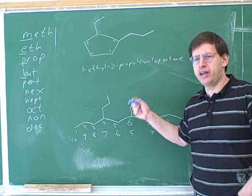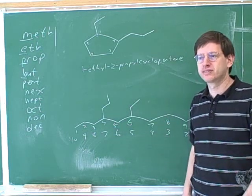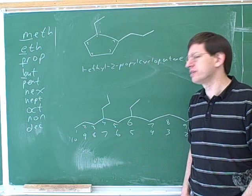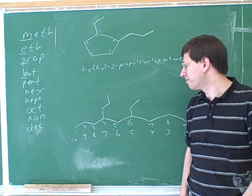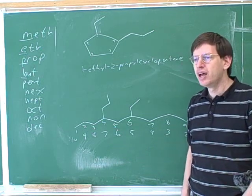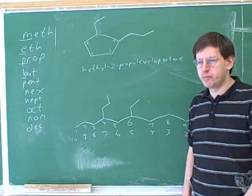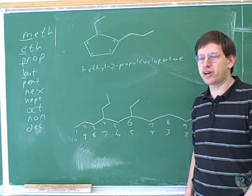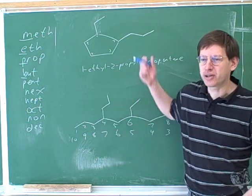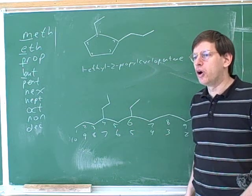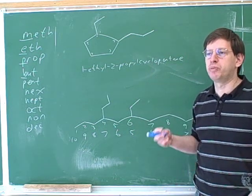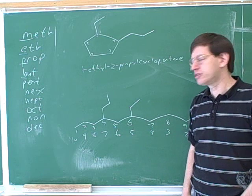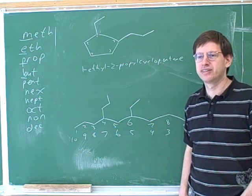If we started the numbering on the left, the smallest locator would be a four. So you want to get the smallest possible first number. So we should start numbering from the left.